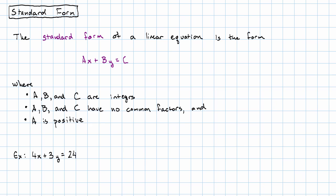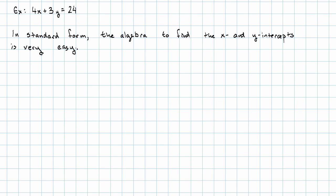What's good about standard form? In standard form, the algebra involved in finding the x and y intercepts is very easy. So in this example, let's say we wanted to find the x and y intercepts and then graph the equation 4x plus 3y equals 24.